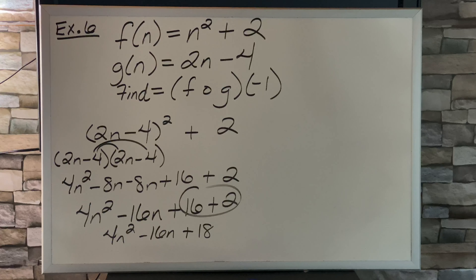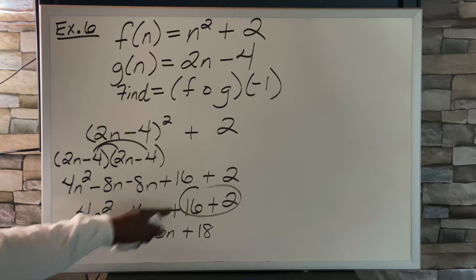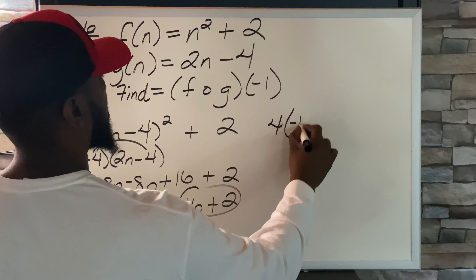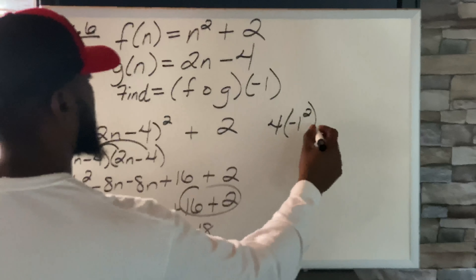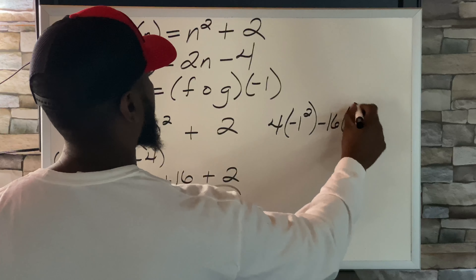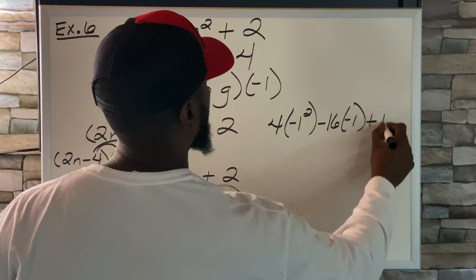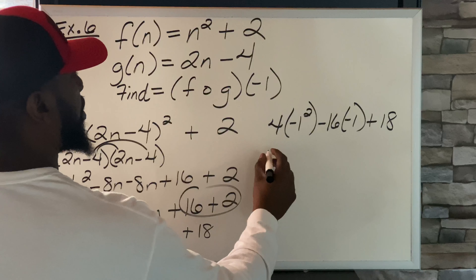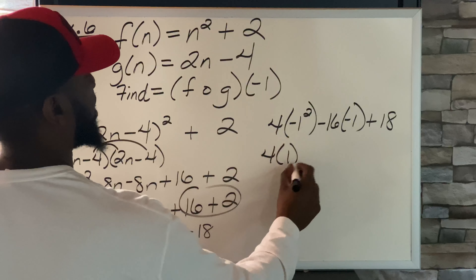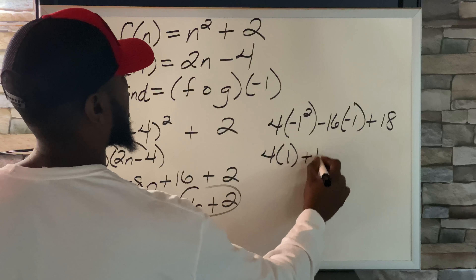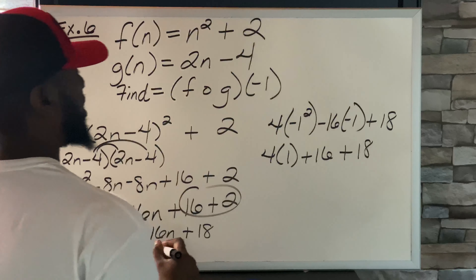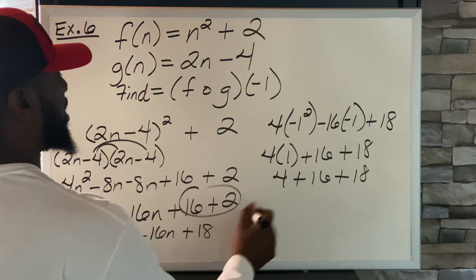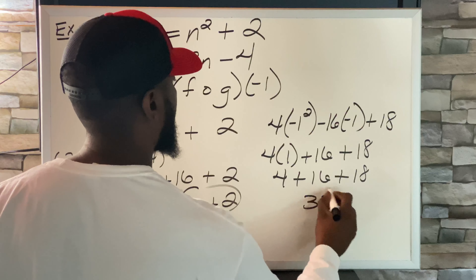Now we substitute negative 1 into our trinomial: 4 times negative 1 squared, minus 16 times negative 1, plus 18. Negative 1 squared is 1, so 4 times 1 is 4; negative 16 times negative 1 is 16; plus 18. So 4 plus 16 plus 18 equals 38.